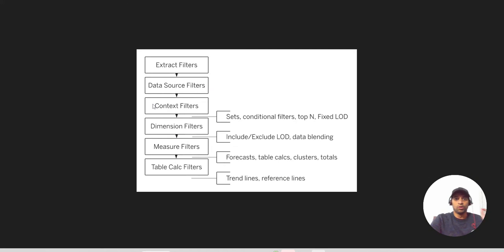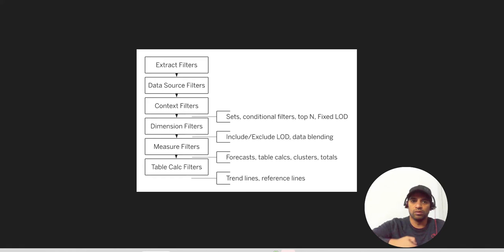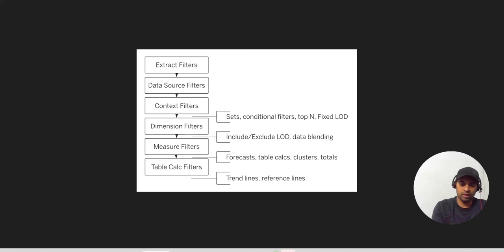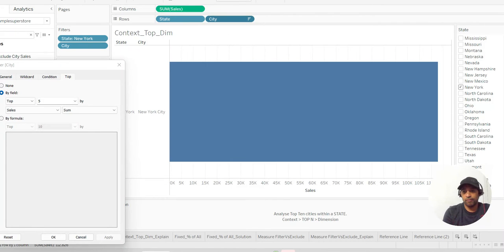Today we are going to discuss one of the most underrated yet very important topics in Tableau — that is Orders of Operation. How the data flows: from the extract filter, to the data source filter, then context, top N, dimension, and measure filters, and how it would affect your analysis. If you are not aware of this, I bet you will find yourself in a difficult situation.